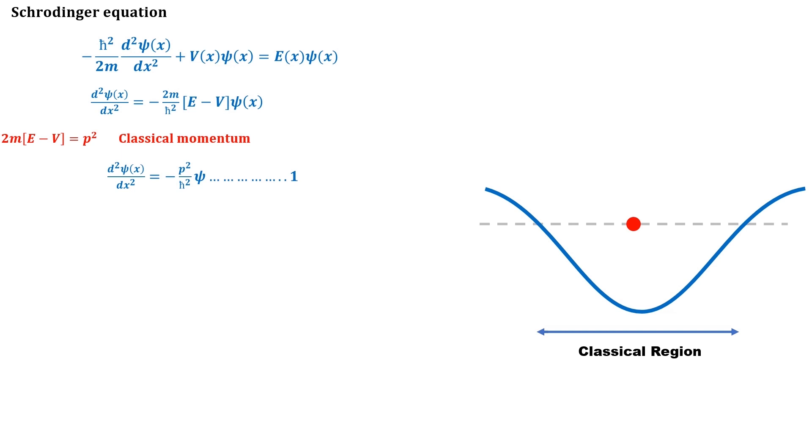The oscillatory solution of the equation is Ae to the power plus minus i φ(x), where A is the amplitude and φ is the phase. If rewriting the solution for one direction only, then ψ equals Ae to the power i φ(x).